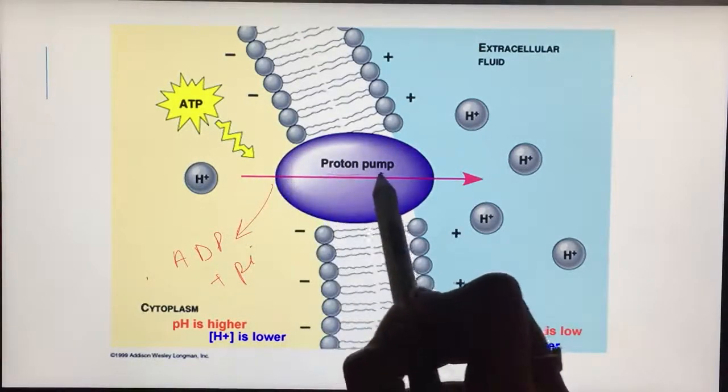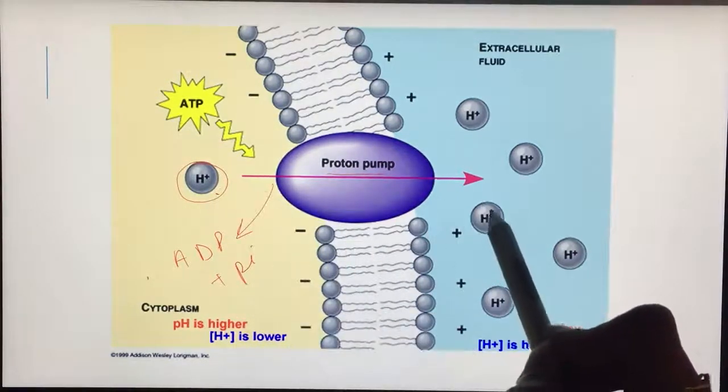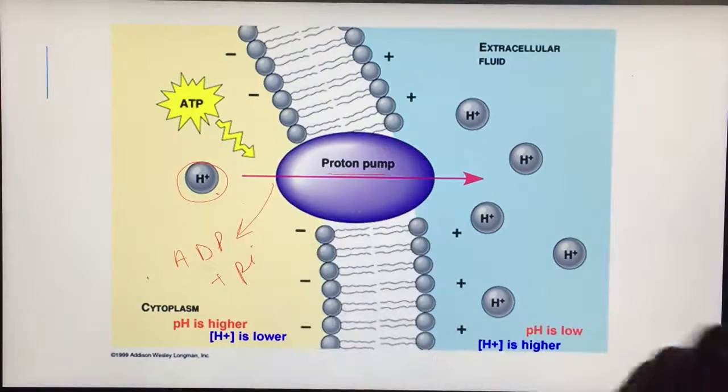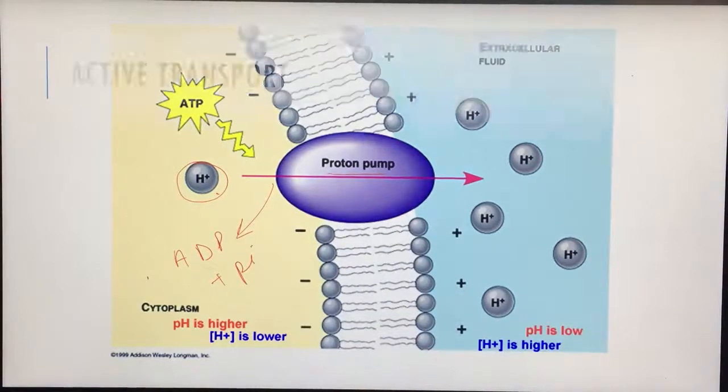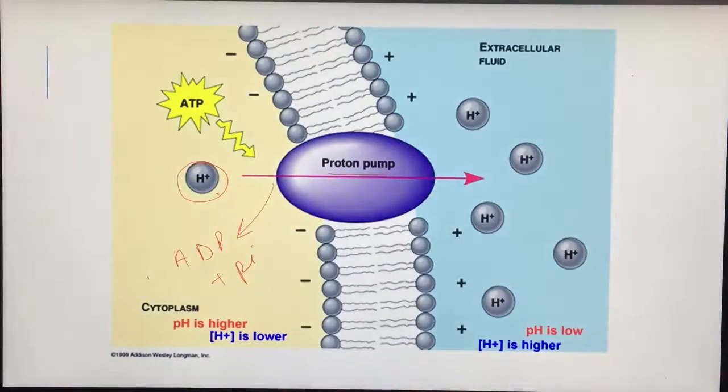That energy is utilized by this pump to pump molecules from their lower concentration to higher concentration. This is against the concentration gradient by pumps. The limiting factor here would be when all the proteins are saturated, there won't be any movement. This would be the maximum movement allowed.